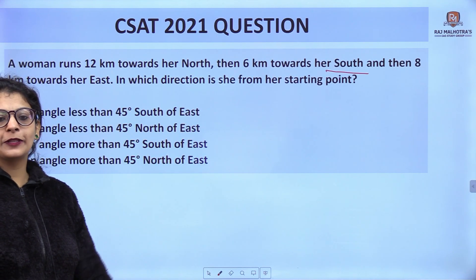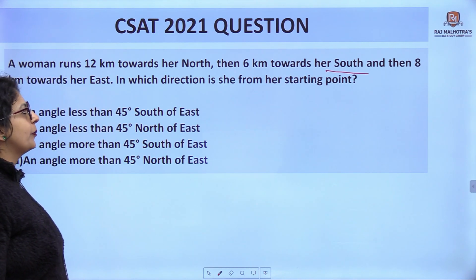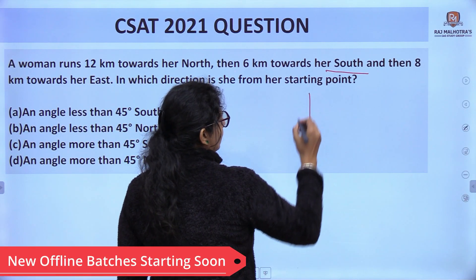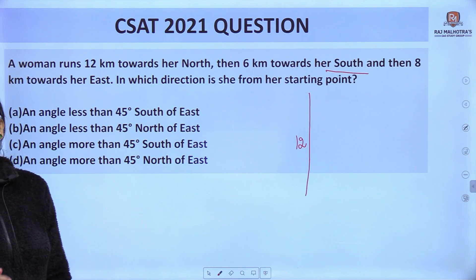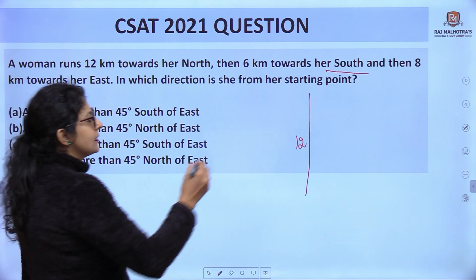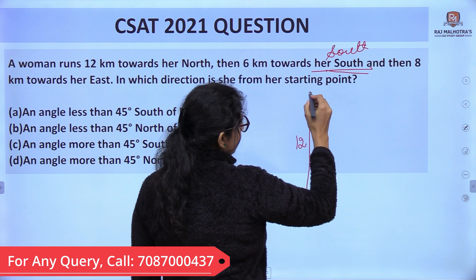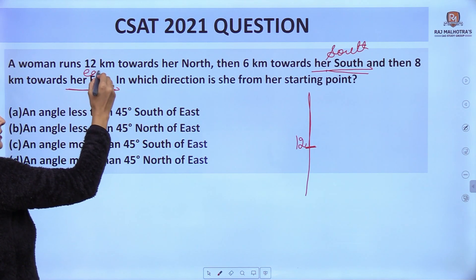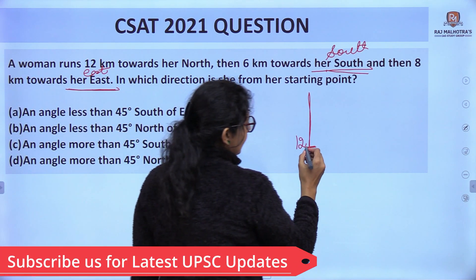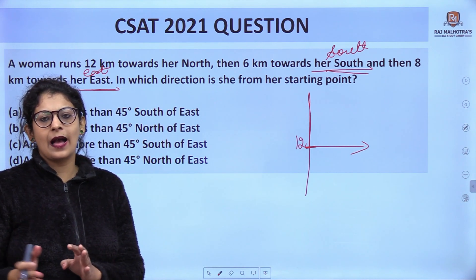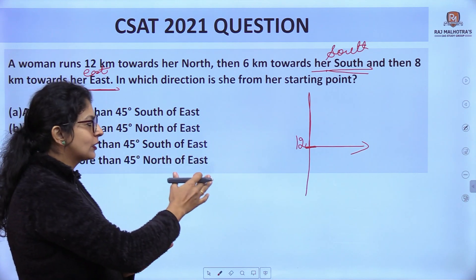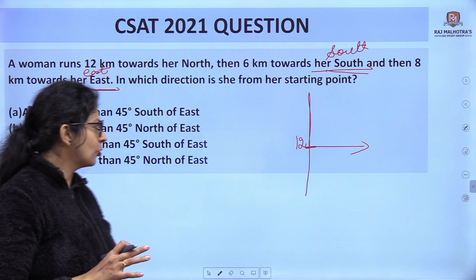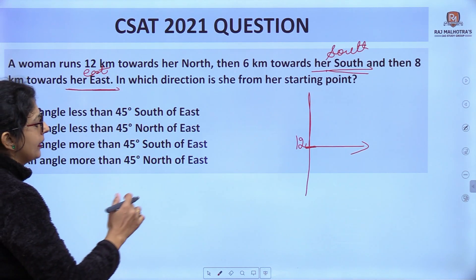Many students must have got this question wrong in the paper. A woman runs 12 kilometers towards her north — that means moving in the north direction, so we go upward 12 kilometers. Then 6 kilometers south — her south means she is moving in the south direction, so 6 kilometers downward. Then 8 kilometers towards her east — her east means she is moving in the east direction. North means upward, south means downward. She ends up here at this point.